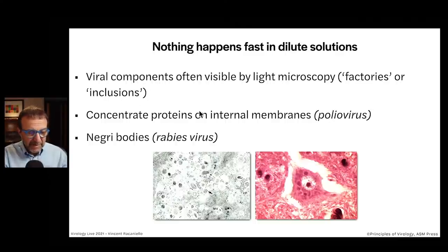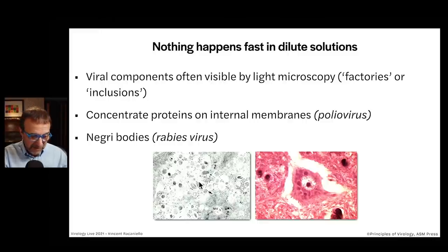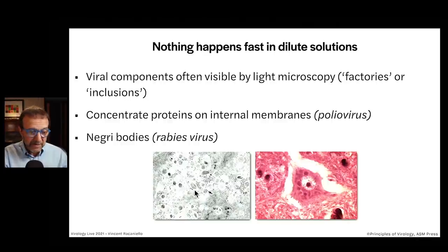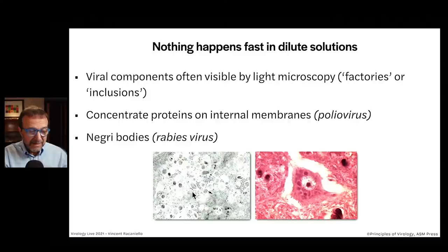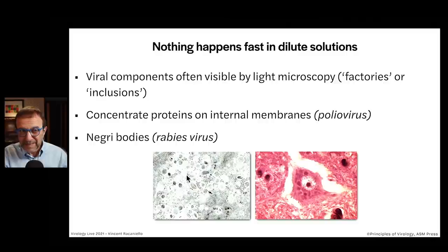For example, poliovirus induces the synthesis of double-membrane vesicles in the infected cell, and it's on the surface of those vesicles that RNA synthesis occurs. The RNA replication complex is attached to those membranes, and that makes sure that everything is in one place — the RNA, the polymerase and accessory proteins — so they don't have to bounce around in the cytoplasm to find each other.